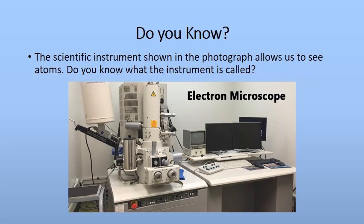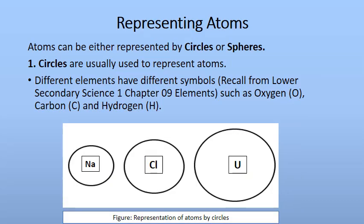There is a 'do you know' question at the end of page 2: the scientific instrument shown in the photograph allows us to see atoms — it is called an electron microscope. Now, regarding the representation of atoms: since we cannot see atoms, we represent them using circles or spheres. Different elements have different symbols — as a hint, recall from Lower Secondary Science 1 chapter 9: oxygen is O, carbon is C, hydrogen is H.